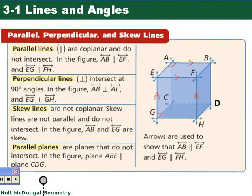Before we start, we have to identify what parallel lines, perpendicular lines, skew lines, and parallel planes are. Starting with parallel lines — we can write parallel lines with the double symbol, it looks like two L's. Parallel lines are both coplanar and they don't intersect. In our figure, line AB is parallel to line EF.